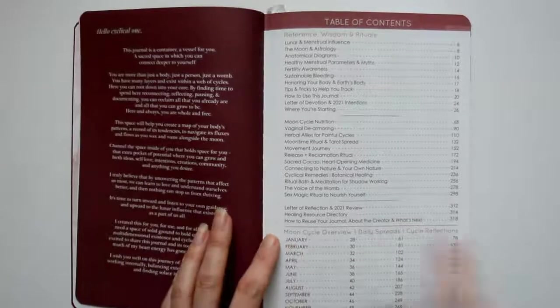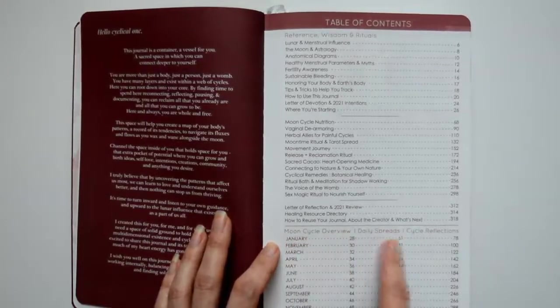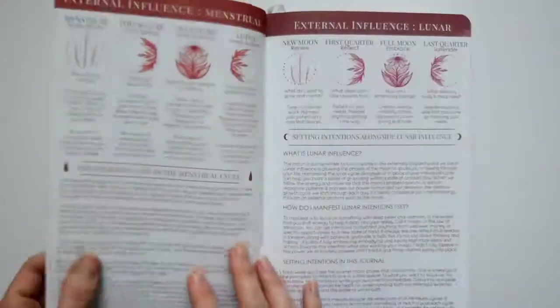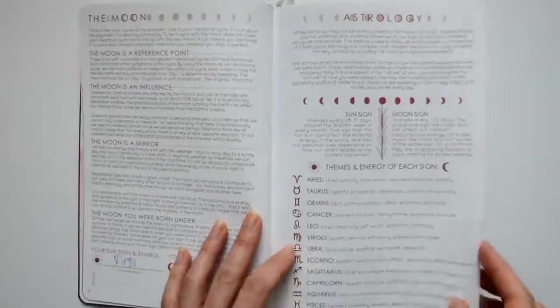There's every month of the year here, monthly cycle overview, daily spreads and cycle reflections. This book is jam-packed with information. This is way more than just a journal. This is just amazing.